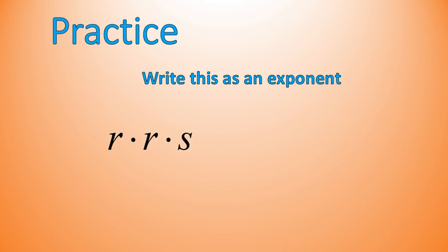Now let's look at another one: r times r times s. Write that one as an exponent, keeping the bases and exponents separate. Pause the video and try it. Welcome back — did you get r squared s? That's what it should look like. We keep r and r as r to the power of 2, and s is written afterwards. Usually when writing variables, you write them in alphabetical order, so I've followed that convention here.